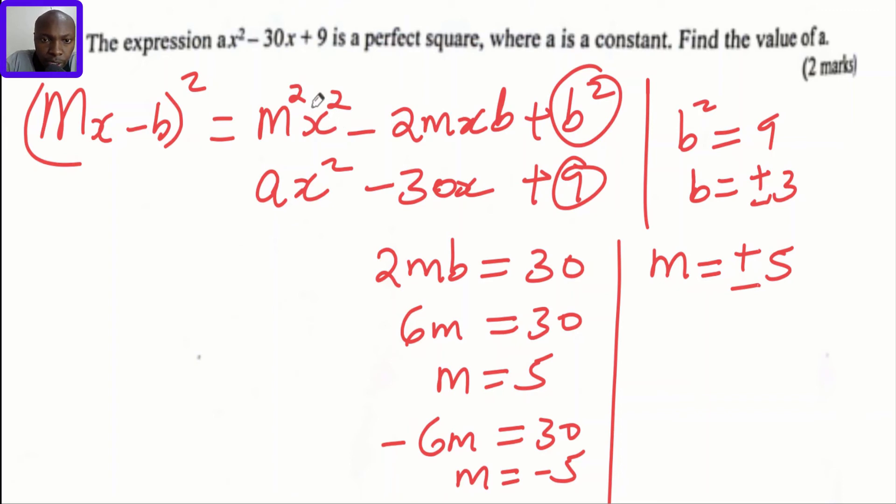Now to get a, we're going to compare the first term: m² = a. Since m is ±5, if you square that you will get 25. Therefore, the value of a is 25. That's method one.